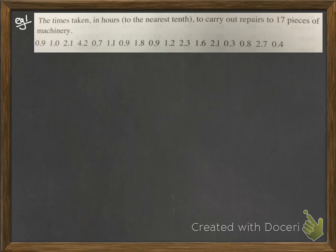Here's an example of constructing a stem and leaf diagram from some data. This is the times taken in hours to the nearest tenth to carry out repairs on seventeen pieces of machinery. We're going to set out our stem and leaf diagram first. We have the key at the bottom saying 2 bar 7 means 2.7 hours.